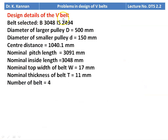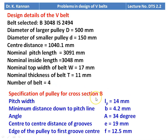Design details: belt selected is B3048 IS 2494, larger pulley = 500 mm, smaller pulley = 150 mm, center distance = 1040.1 mm, nominal pitch length = 3091 mm, nominal inside length = 3048 mm, W = 17 mm, t = 11 mm, number of belts = 4. Pulley specification for section B: LP = 14 mm, B = 4.2 mm, 2β = 34 degrees, groove spacing = 19 mm, F = 12.5 mm.